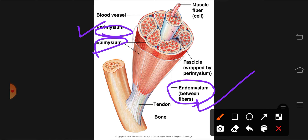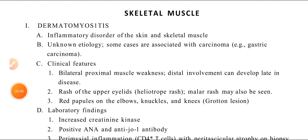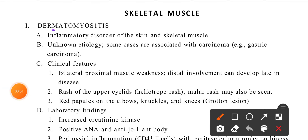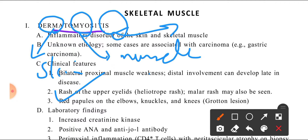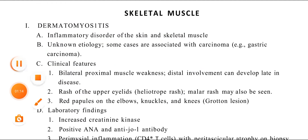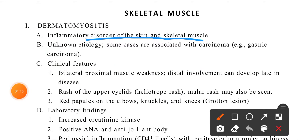Think about muscles — if inflammation starts, then there will be pain and these symptoms will come. My first disease is dermatomyositis. 'Derma' means skin is involved, 'myo' means muscle, and 'itis' means inflammation. So it means that there is skin and muscle inflammation — it is an inflammatory disorder of the skin and the skeletal muscles.